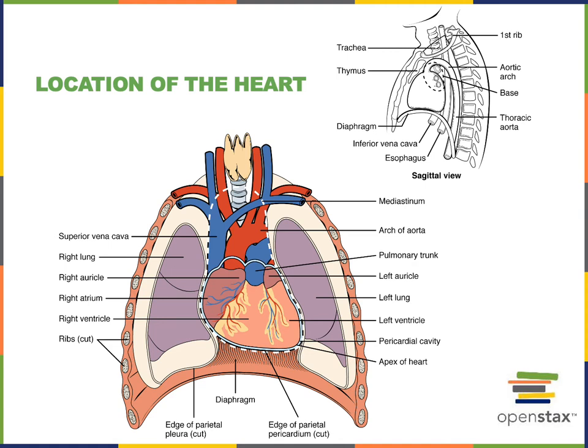The heart is oriented obliquely within the mediastinum, pointed to the left, with two-thirds of the heart found left of the midline and one-third to the right. The base of the heart is at the level of the second rib and fifth thoracic vertebrae, and the apex of the heart is found at the fifth intercostal space — between the fifth and sixth rib — at the level of the ninth thoracic vertebrae.